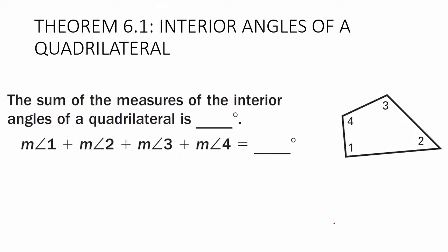Theorem 6.1: interior angles of a quadrilateral. A quadrilateral has four sides, and the interior angles add up to 360 degrees. So the sum of the measures of the interior angles of a quadrilateral is 360: measure of angle one plus angle two plus angle three plus angle four equals 360 degrees.